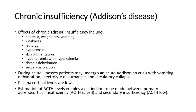Chronic insufficiency, such as Addison's disease, presents with anorexia, weight loss, vomiting, weakness, lethargy, hypertension, skin pigmentation, hyponatremia with hyperkalemia, chronic dehydration, and sexual dysfunction. During acute illnesses, patients may undergo an acute Addisonian crisis with vomiting, dehydration, electrolyte disturbances, and circulatory collapse. Plasma cortisol levels are low. Estimation of ACTH levels enables a distinction between primary adrenocortical insufficiency, where ACTH is raised, and secondary insufficiency, where ACTH is low.